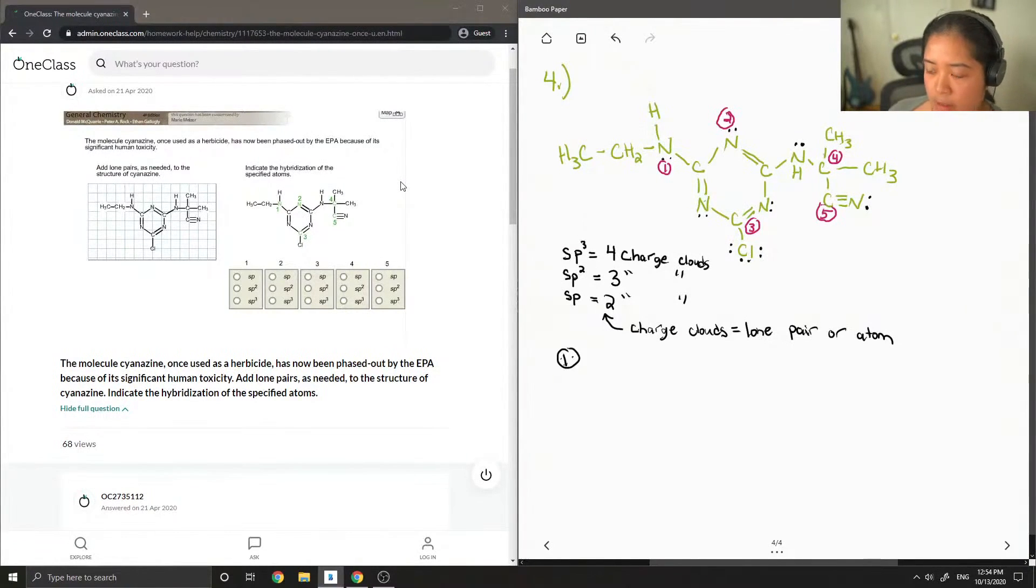So first let's look at our first nitrogen. It has one, two, three atoms, and also one lone pair. So that means it has three charge clouds in total. So that nitrogen is SP2.